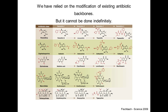Instead, what we've been using in recent decades is targeted modification of existing antibiotic backbones — that's how penicillin, over many generations of development, turned into third and fourth generation penicillins like piperacillin, and the same for cephalosporins and tetracyclines. Over the years we've developed new variants that overcome drug resistance, but we cannot do this indefinitely. At some point we run out of new variants, and existing antibiotic classes become obsolete.